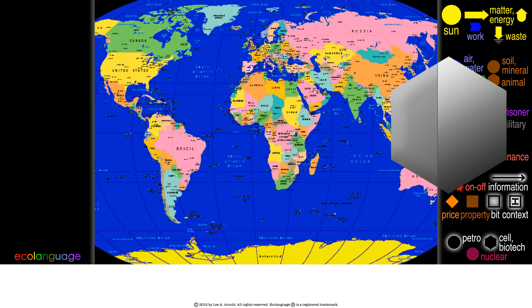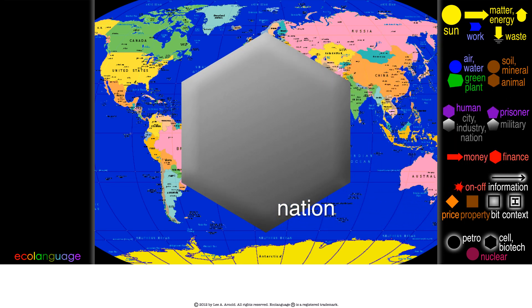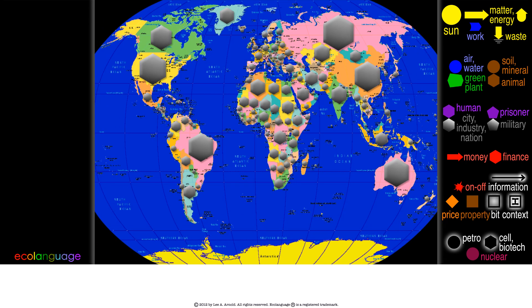From the symbols, we use the silver hexagon for any physical capital, so it can represent a nation or all nations.